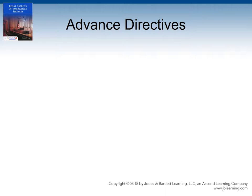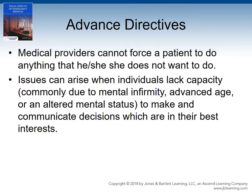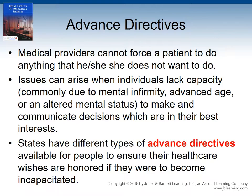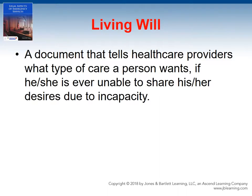Shifting gears from patient privacy and confidentiality, we will now explore advance directives. Patients have tremendous personal autonomy rights and, so long as the patient has the capacity to make decisions, medical providers cannot force the patient to receive any treatment he or she does not want. Unfortunately, there are often times when an individual may lack capacity due to a medical or other condition, such as medical infirmity, advanced age, or an altered mental status. Advance directives were created so that people can ensure their healthcare wishes are honored if they become incapacitated. One of the most common types of advance directive is a living will, which tells healthcare providers what the person would want done if he or she is ever unable to share those desires due to incapacity. A living will has no bearing on the person's healthcare decisions while of sound mental status; the provisions only become effective once the person is incapacitated to a certain degree.